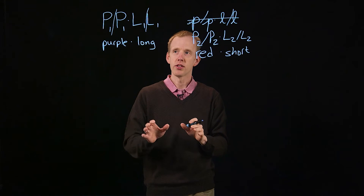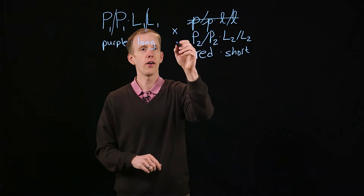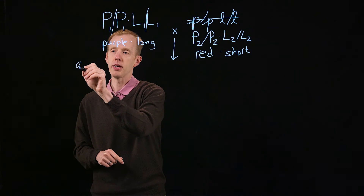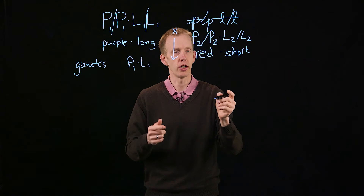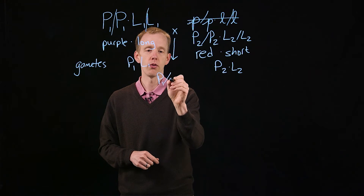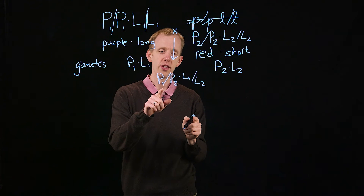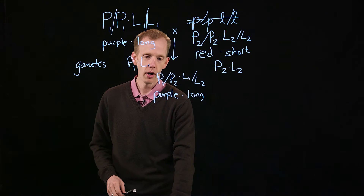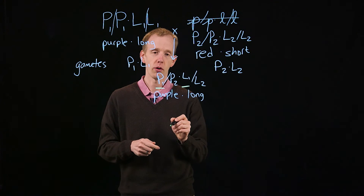The way that we check dominance is simply by crossing these two pure-breeding genotypes together and asking what are the phenotypes in their offspring. These parents produce gametes that are only P1, L1 gametes, and the other pure-breeding genotype produces P2, L2 gametes. When you combine these together, you get a P1 over P2, L1 over L2 F1 offspring. What Mendel found was that this individual had purple flowers and long pollen grains, and that defined the P1 allele and the L1 allele as dominant.